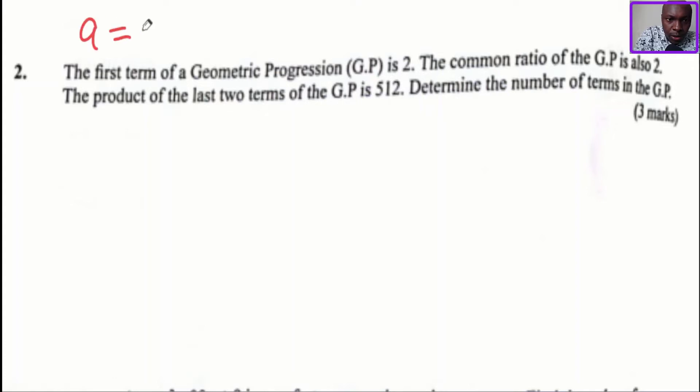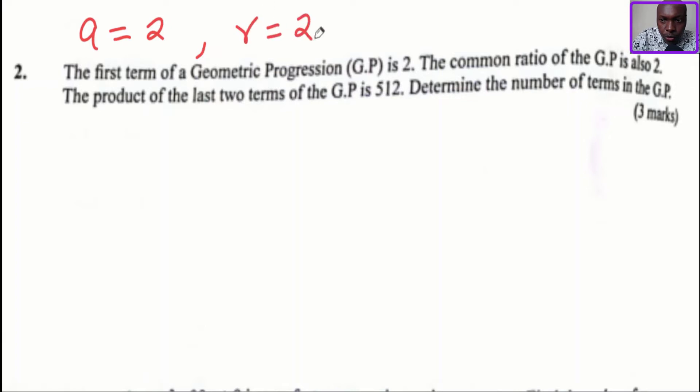Given the first term of the GP is 2. The first term of a GP is A, that is 2. Then given the common ratio — the common ratio is also 2.